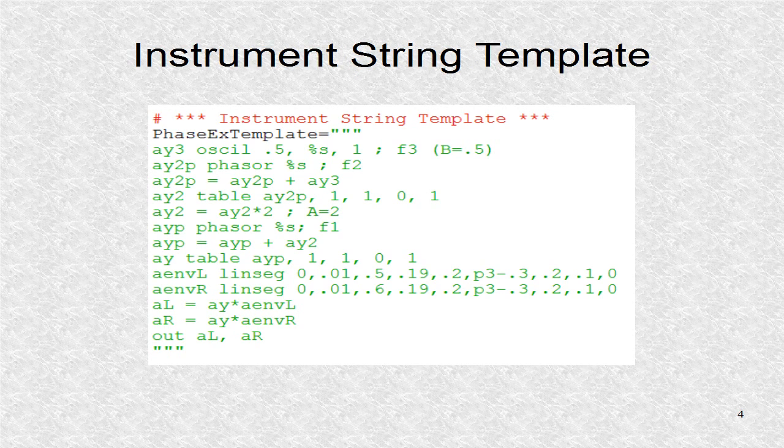These steps are indicated in this instrument string template. There are three placeholders representing F3, F2, and F1. We have fixed the values of A and B. After getting Y, two envelopes are created for the left and right channels. There is a fast attack and then the signal slowly decays with fade out at the end.